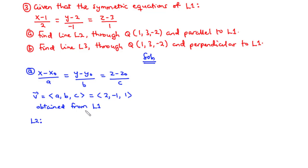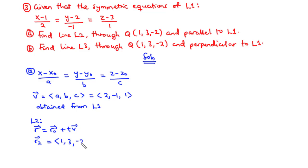For line 2, we have the point the line is passing through, and we have the direction vector which is parallel to L1. So we can find the vector equation, given by R equals R0 plus T times V. Because we are finding line 2, we write R2 equals — for R0 we have the components 1, 3, negative 2, that is where the line passes through — plus T times the direction vector parallel to L1, which is 2, negative 1, 1. So this is the vector equation of line 2. We are done for A. Now let's move on to B.